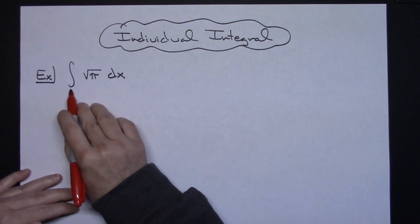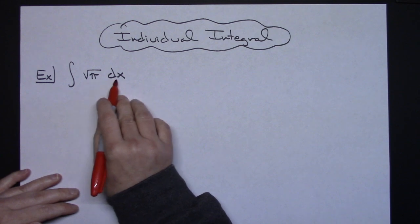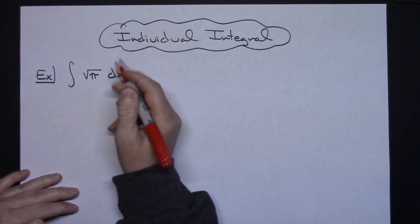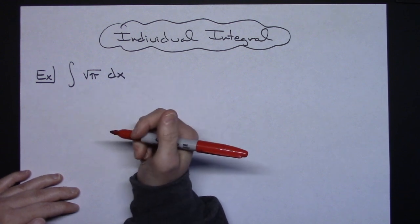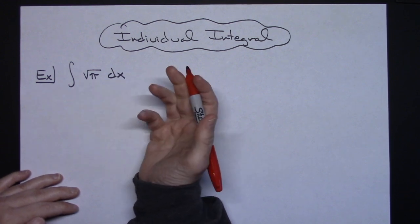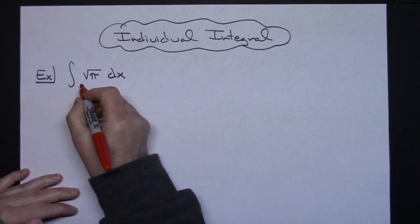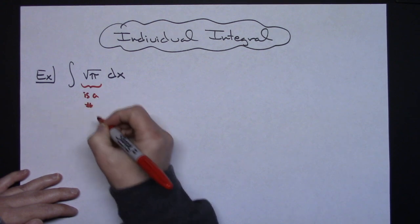If we've got the integral of the square root of pi dx, just because this is in symbol notation and you've got a pi sitting in there, a lot of people aren't going to at first, maybe especially if you're not very good at math, recognize that really square root of pi is just a number. It's a constant. If it's a number, I can pull it out.